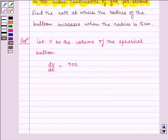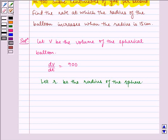Let R be the radius of the sphere. And here we have to find the rate at which the radius of the balloon increases. So, it means we have to find dR by dt.